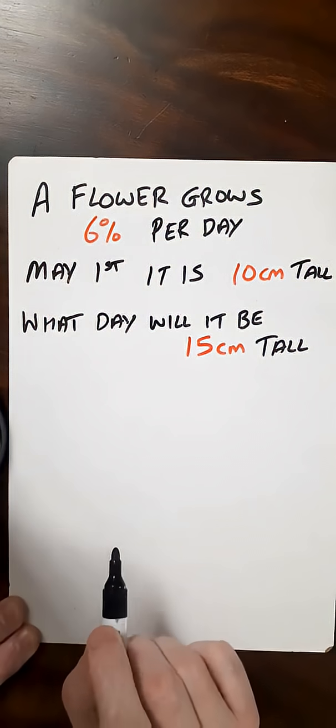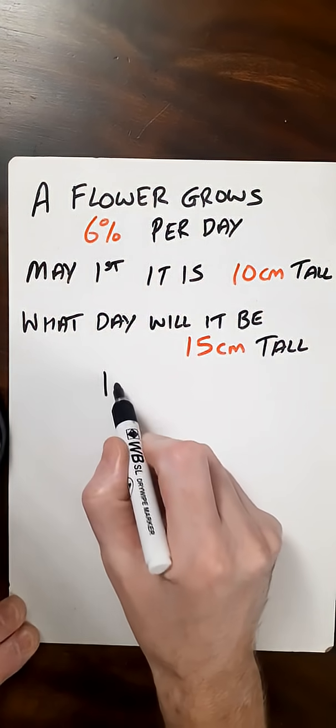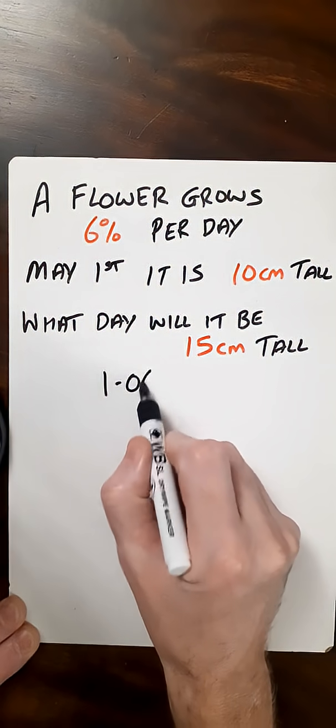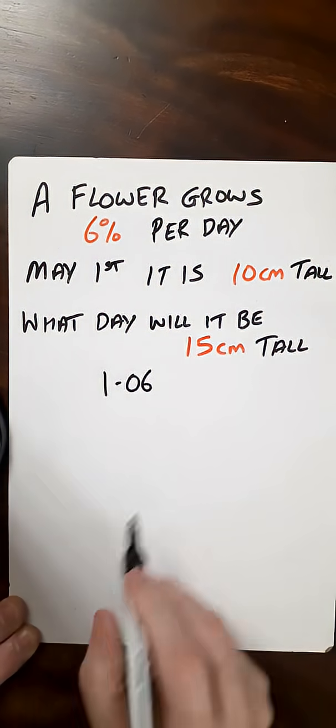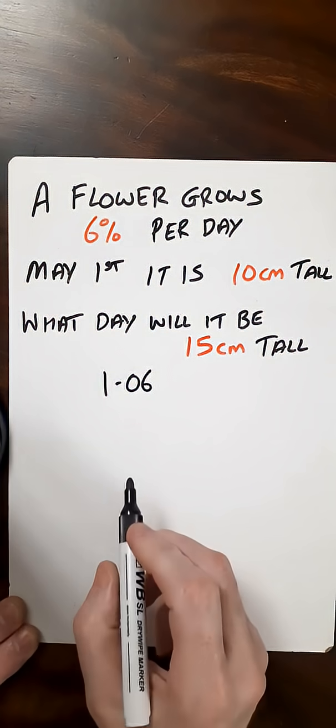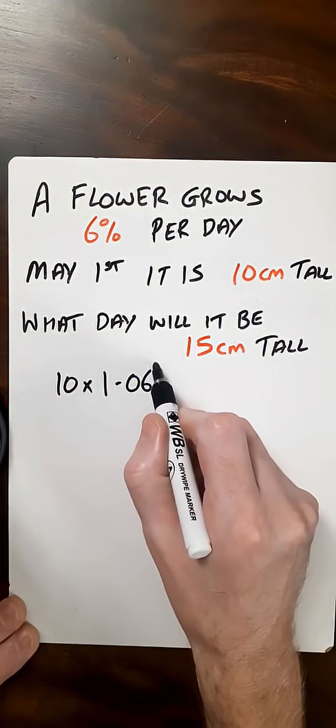So first of all, get this 6% and turn it into a multiplier in terms of growth. So 6% will become 1.06, so 0.6 plus 1. Then we multiply that by the height at the original beginning, so that's 10 times that, and then we raise that to the day.